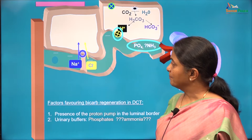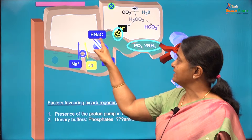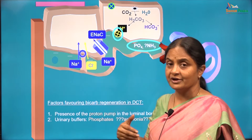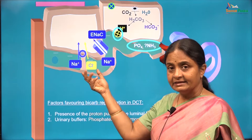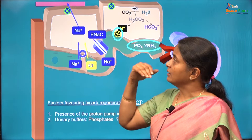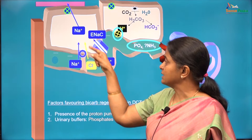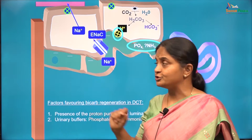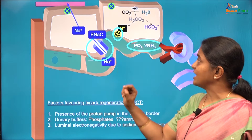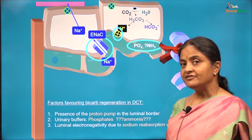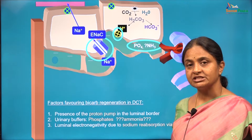Why does this luminal electronegativity arise? In the lumen, sodium can be reabsorbed by two transporters: a sodium-chloride symporter and an epithelial sodium channel, the ENaC. The sodium-chloride symporter is electroneutral — one positive and one negative ion go together — so it does not generate any potential difference. However, sodium reabsorption via sodium channels will leave the lumen negative. ENaCs are therefore responsible for the luminal electronegativity. The sodium that moves in is extruded from the cell by the sodium-potassium pump in the basolateral border. The third factor helping bicarbonate generation in the distal tubule is the luminal electronegativity due to sodium reabsorption via ENaC.